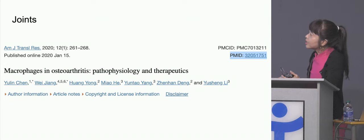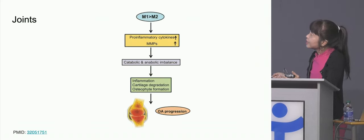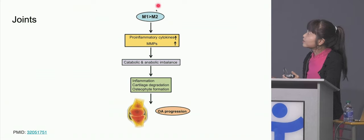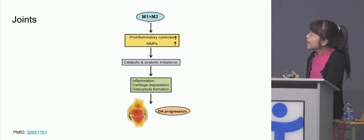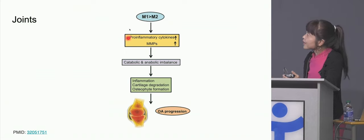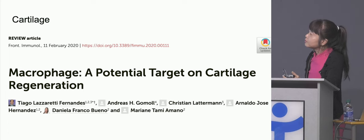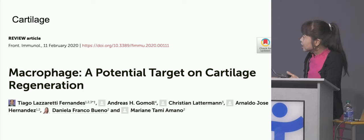Macrophages are definitely involved in osteoarthritis. There's a sense that we have more of these M1 macrophages with a pro-inflammatory program that destroys joints and cartilage. But they're also really important in regeneration of cells — in this case, cartilage regeneration.